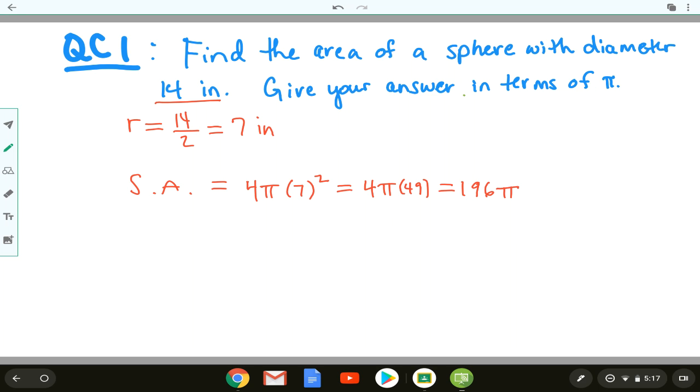And 4 times 49 is 196π. Pay attention to units. The radius was given in inches so my units for the surface area will be inches squared or square inches. And I'm leaving my answer in terms of π because they asked me to do that.